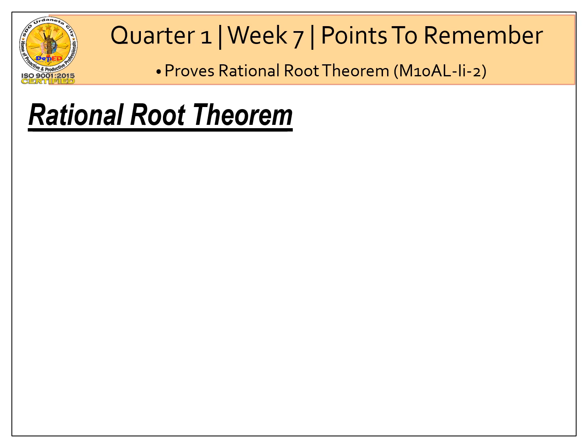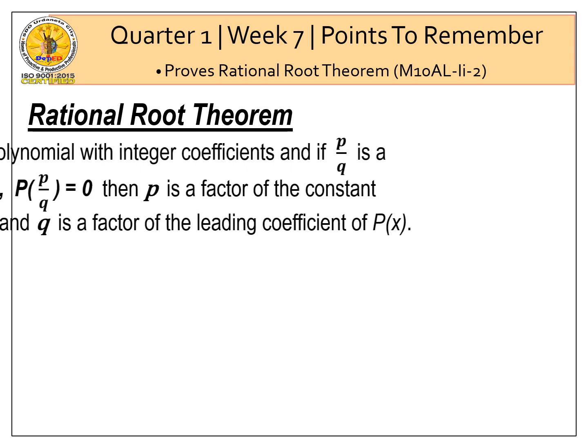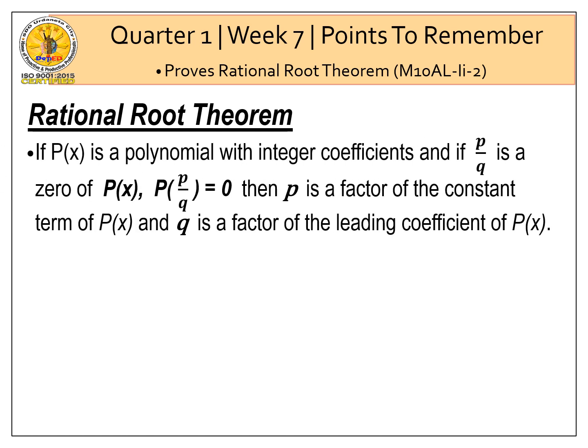What is the Rational Root Theorem? If p(x) is a polynomial with integer coefficients, and if p over q is a zero of the polynomial function — meaning p(p/q) is equal to zero — then p is a factor of the constant term of the polynomial function, and q is a factor of the leading coefficient of the polynomial function.